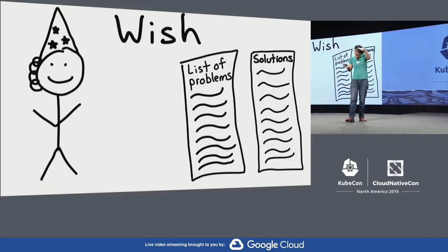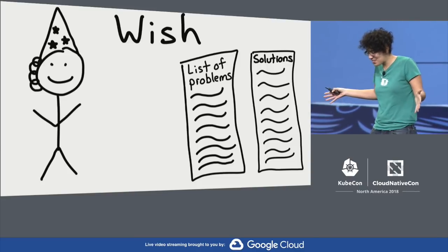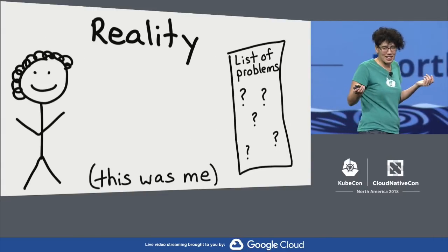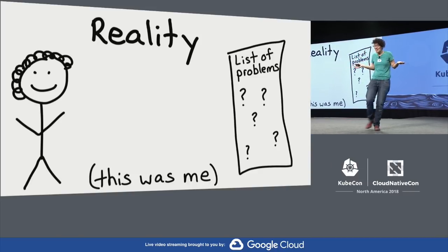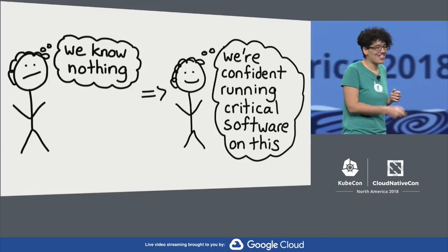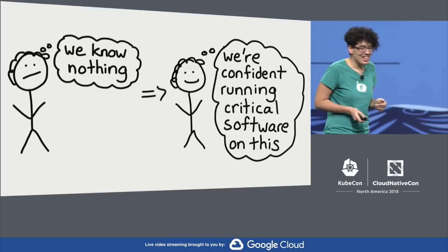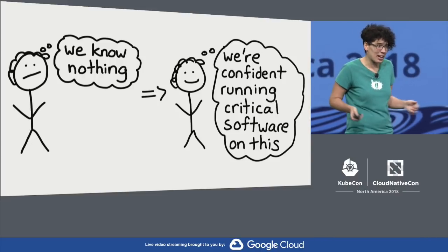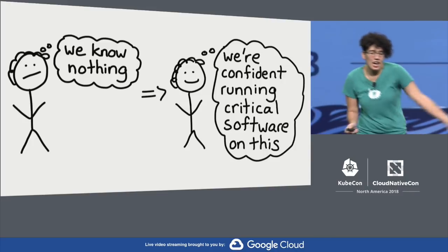When I started working on this, I didn't know anything about Kubernetes or Envoy for either of these projects. I really wished I had a list of everything that could possibly go wrong and all the solutions, so I could deploy new infrastructure and everything would just work. The reality is: I didn't know. How are we going to go from knowing nothing about how to operate the software to being confident running critical production software on it and promising our users that this will be fine? That's a really big leap.